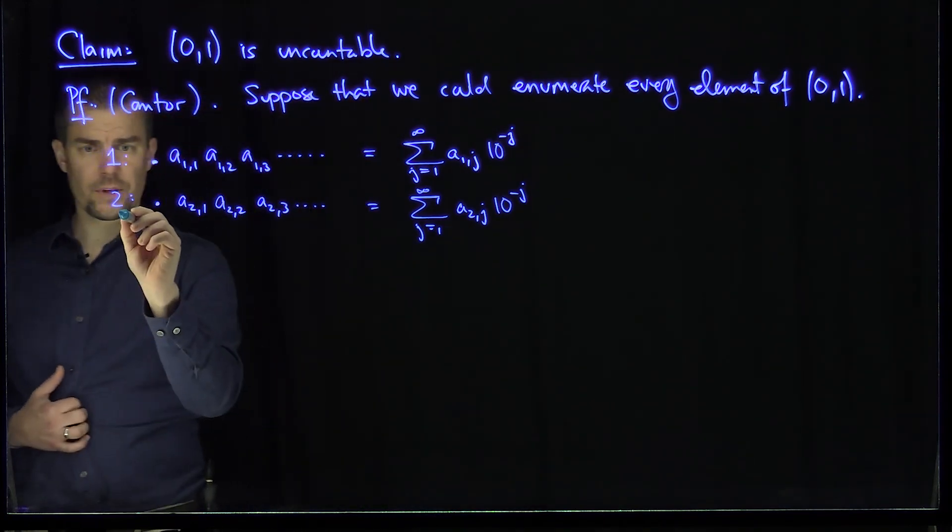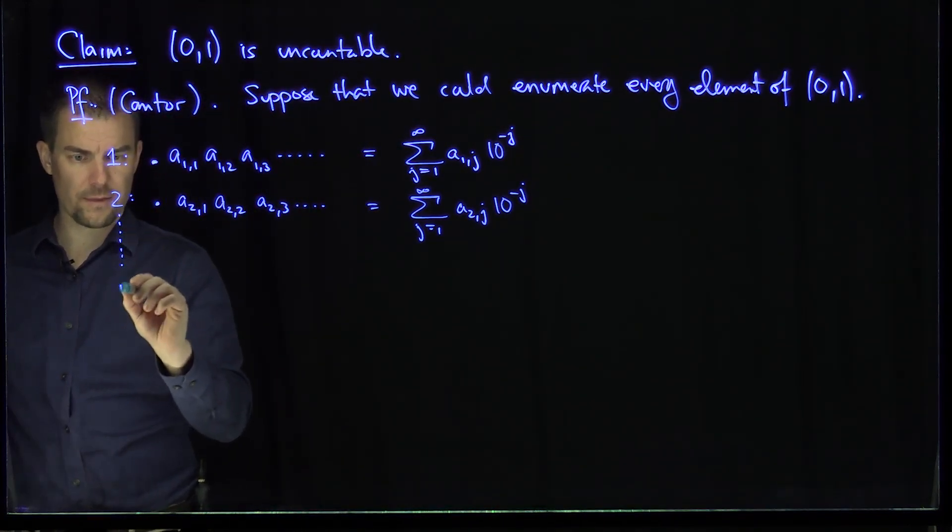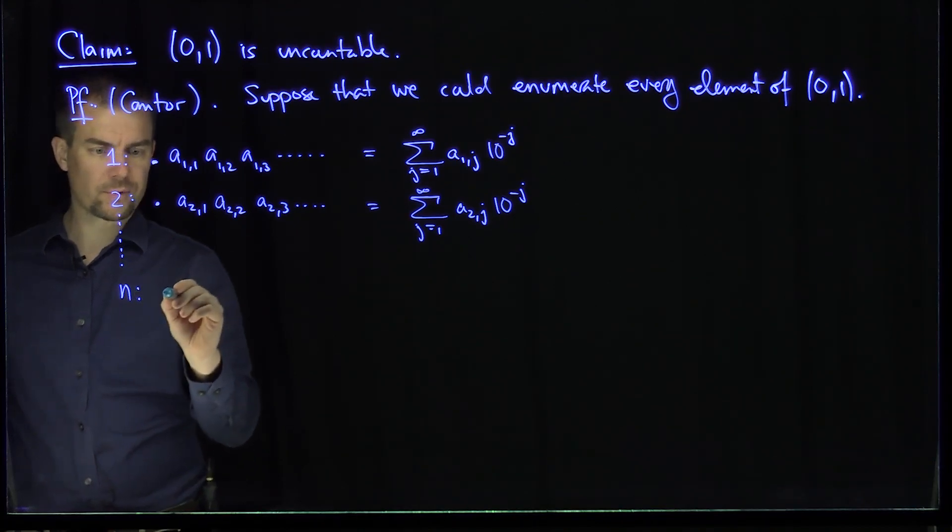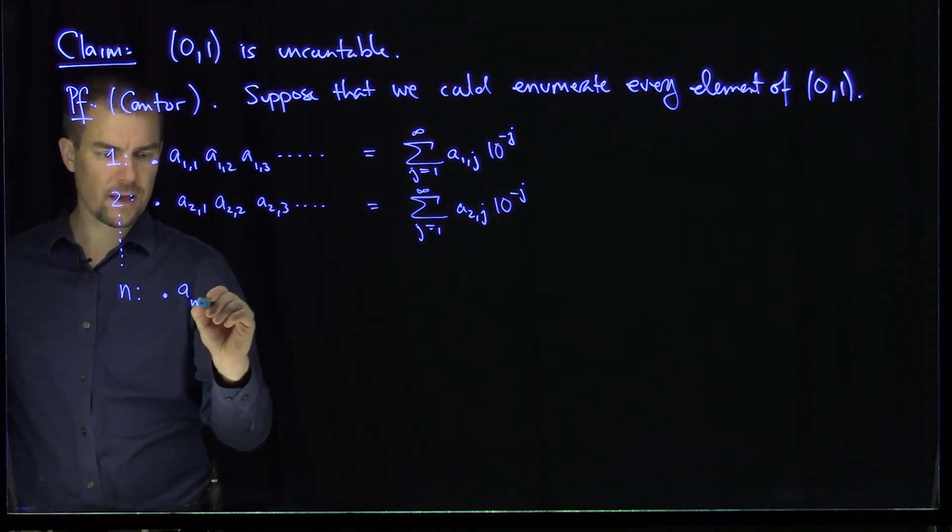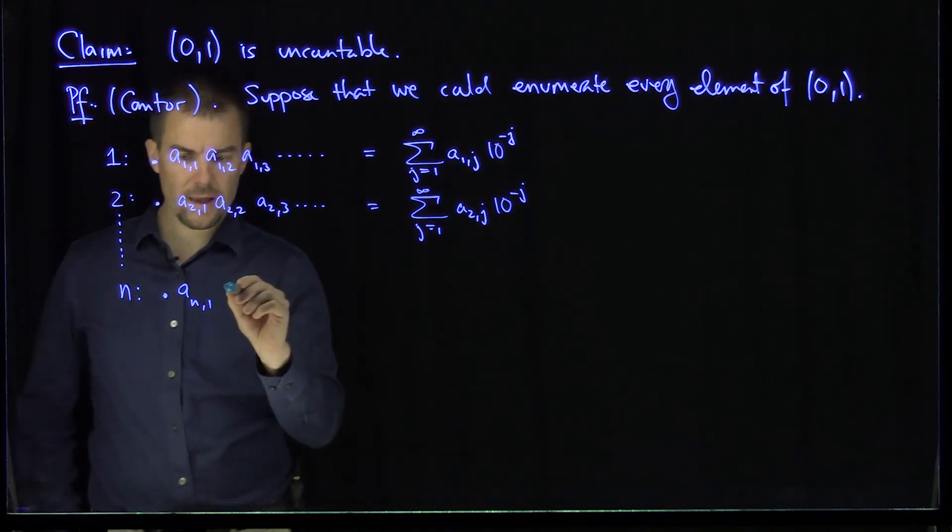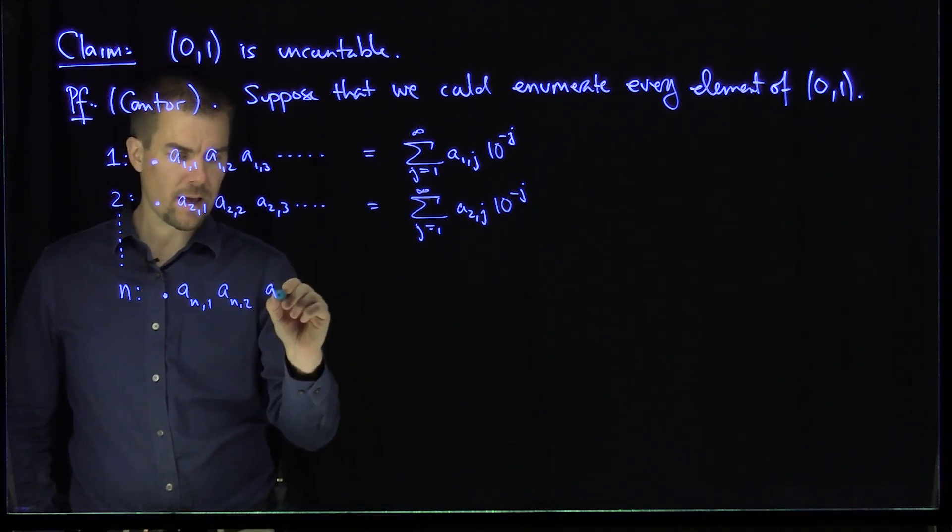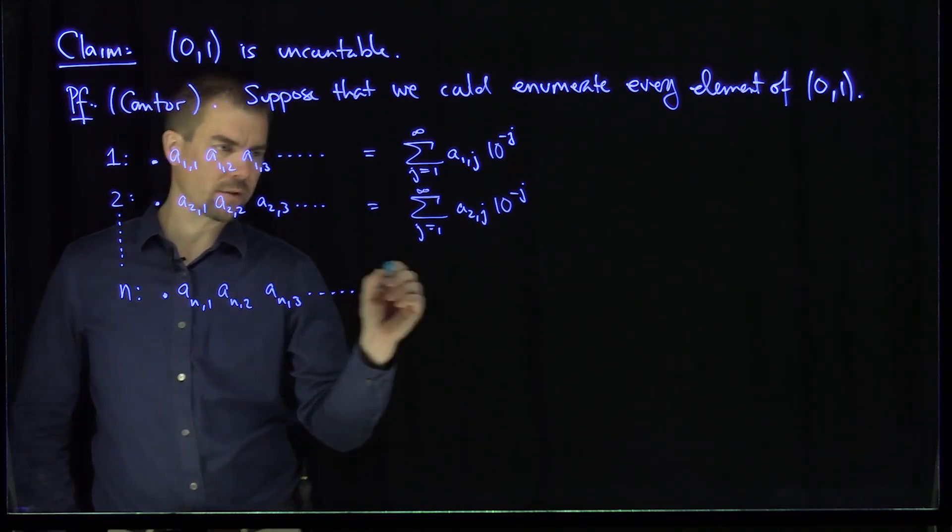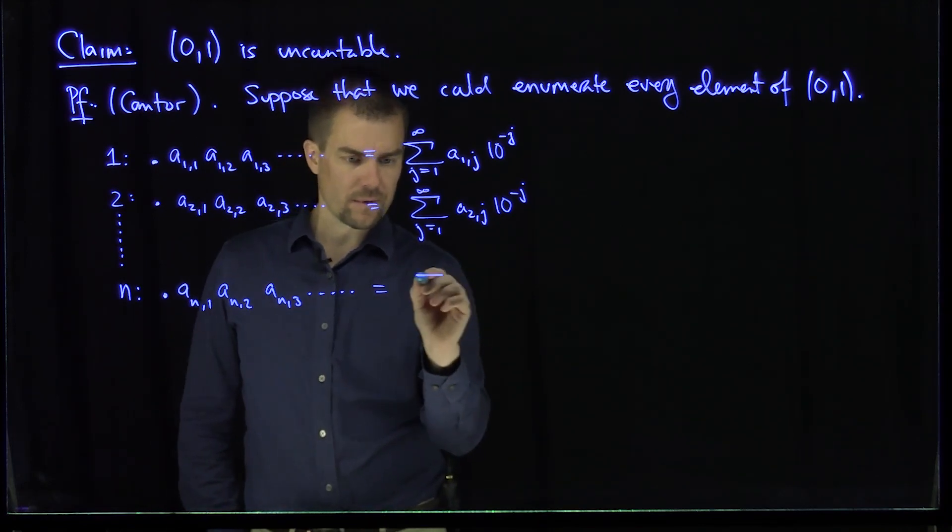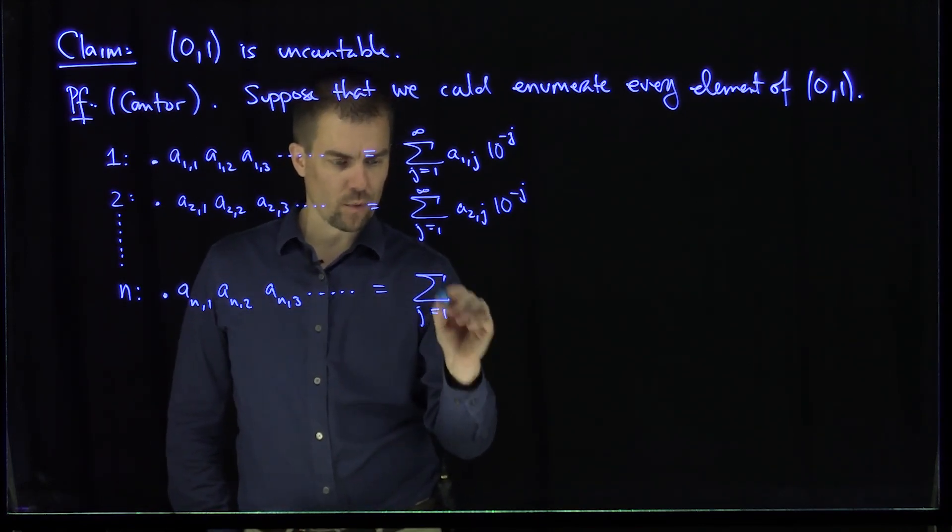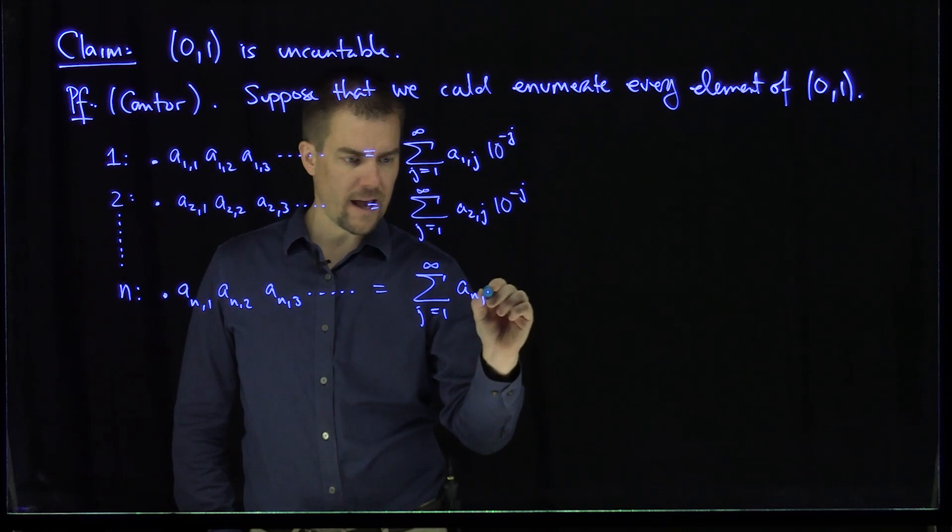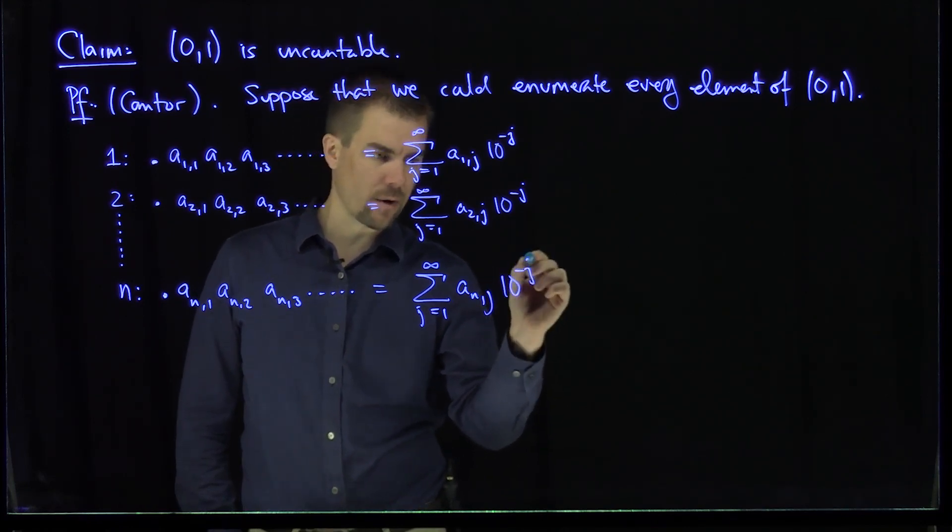In general, the nth term will be mapped to dot an1, an2, an3, and so on forever, which maps to the sum j goes from 1 to infinity of anj times 10 to the power negative j.